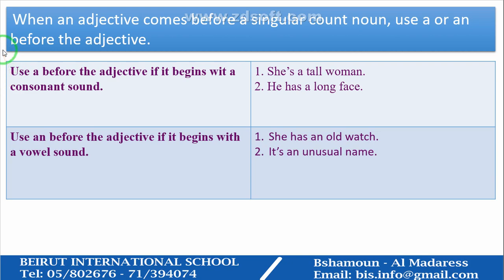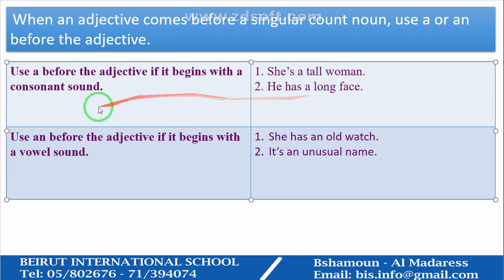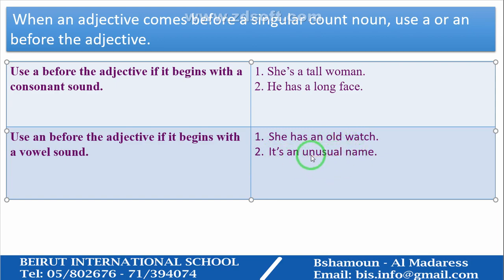When an adjective comes before a singular count noun, use A or AN before the adjective. Use AN if the adjective begins with a vowel sound: 'She has an old watch', 'It's an unusual name.' The five vowels are O, U, I, A, and E — whenever the adjective starts with one of these five letters, always use AN and not A.